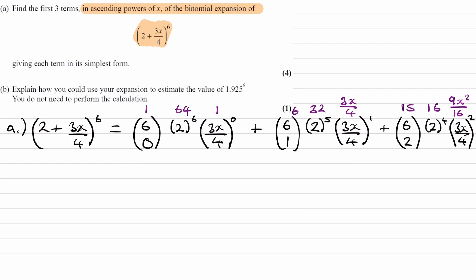Let's multiply this all out. 2 plus 3x over 4 to the power of 6 is equal to 64 plus 144x, so that's these three terms here multiplied together. And then the final term would be 135x squared, which is these three terms multiplied by one another. So that's part A done.